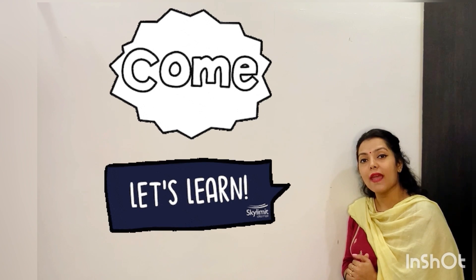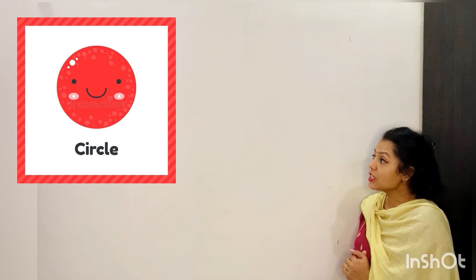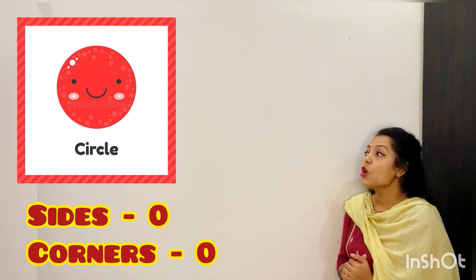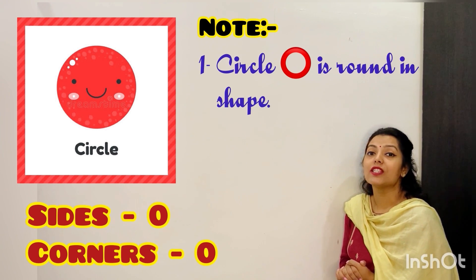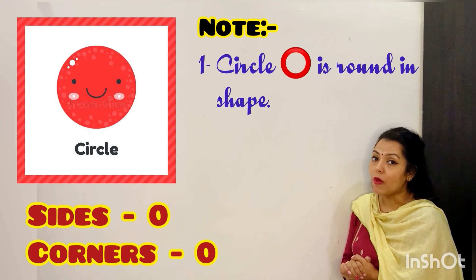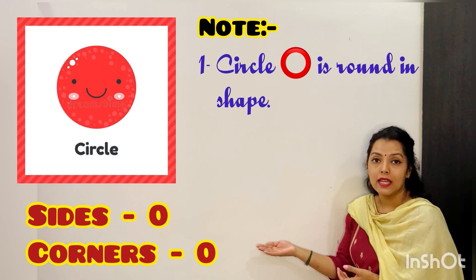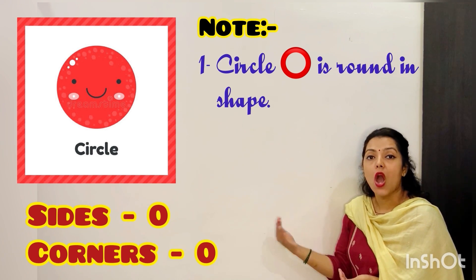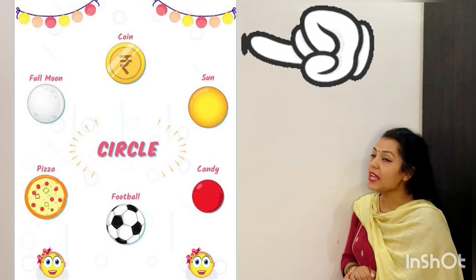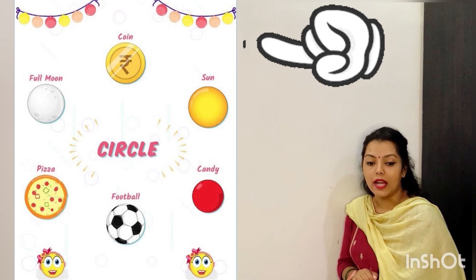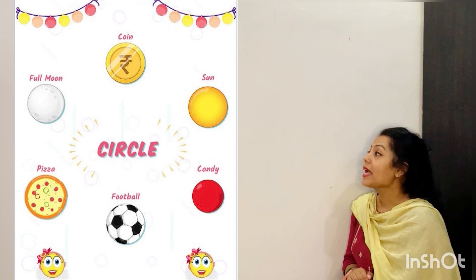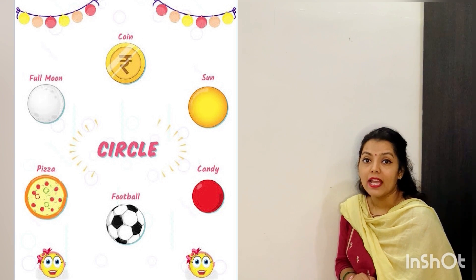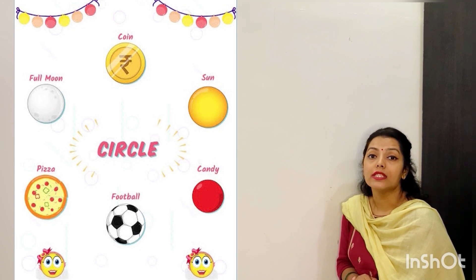Come let's learn about them. Our first one is circle. As you can see, in a circle we have no side and no corner. The circle is round in shape, so that's why we don't have any side or any corner. Come let's see a few examples of circle. We have coin, sun, full moon, pizza, candy, football.